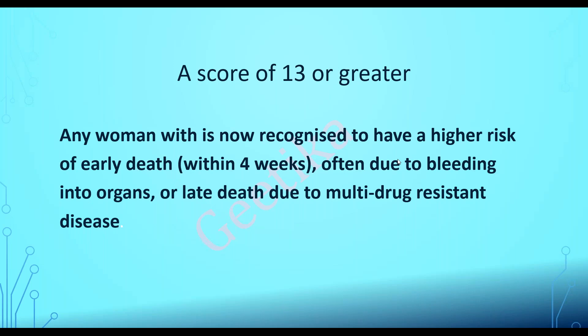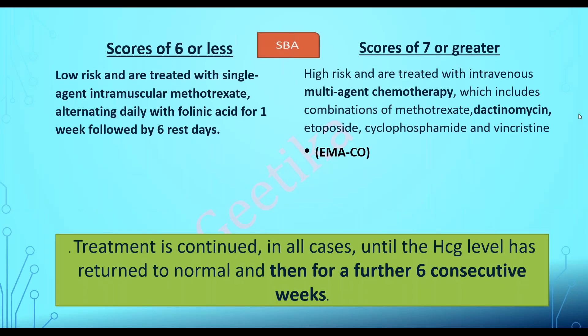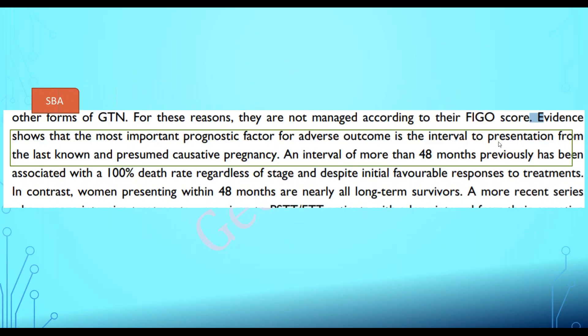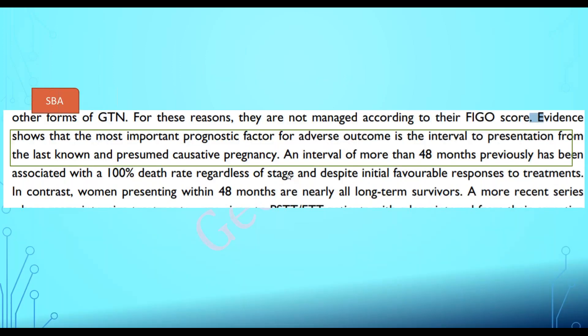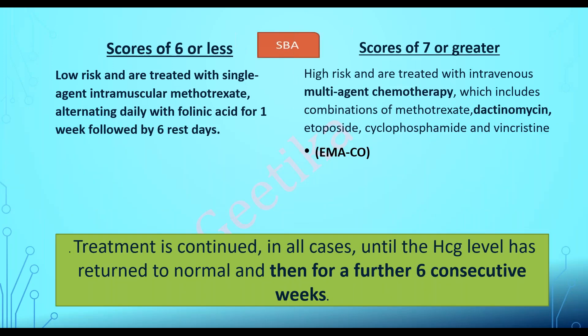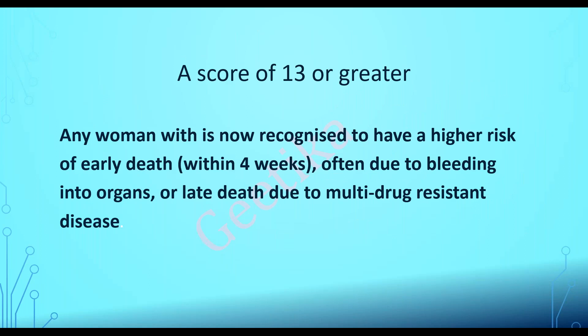What if the FIGO score is 13 or more? The maximum possible FIGO score is 25. Score six or less is low risk, seven or more is high risk. If the score is 13 or more, the patient has very poor prognosis with high risk of early death within four weeks — often due to bleeding into organs — and late death due to multi-drug resistance.